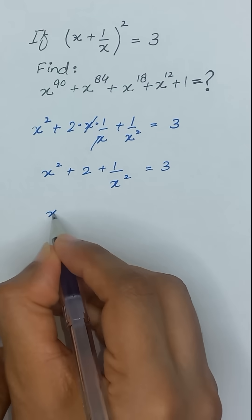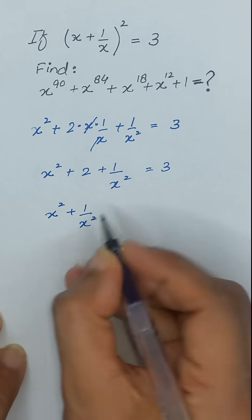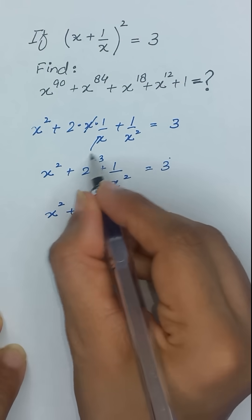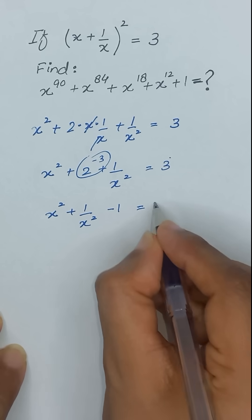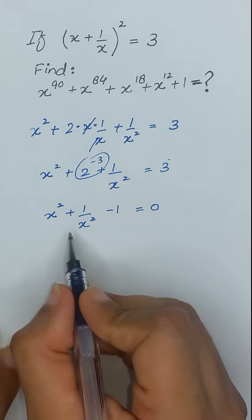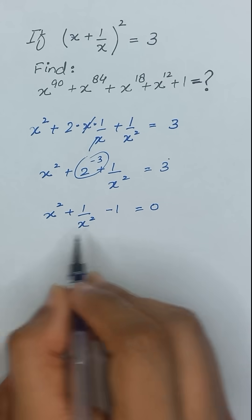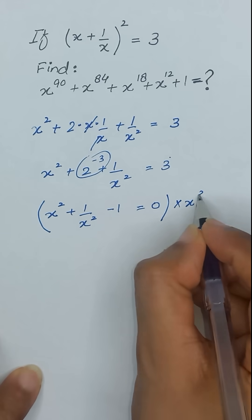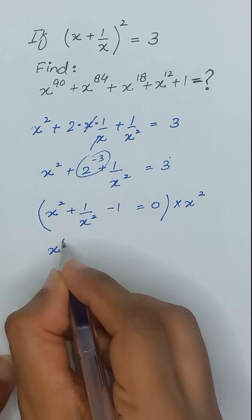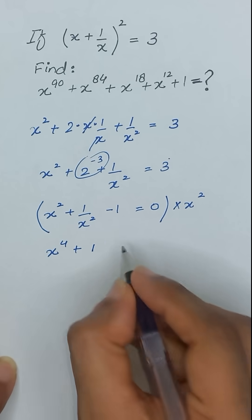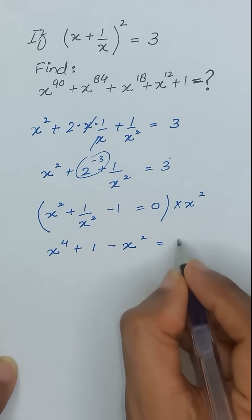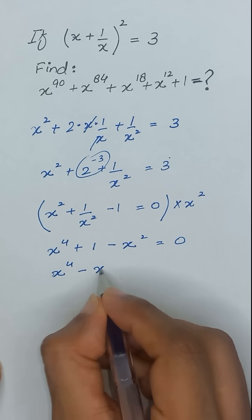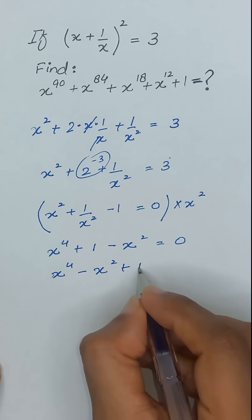We write this equation as x² plus 1/x² plus 2, and taking 3 to the left-hand side gives minus 3, resulting in minus 1, so the left side equals 0. Now we remove the denominator by multiplying x² on both sides, giving x⁴ plus 1 minus x² equals 0. Arranging this: x⁴ minus x² plus 1 equals 0. We call this equation number 1.